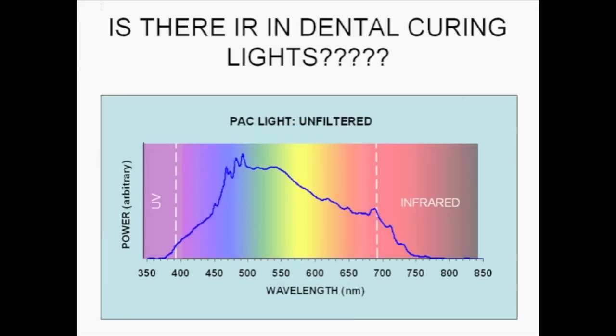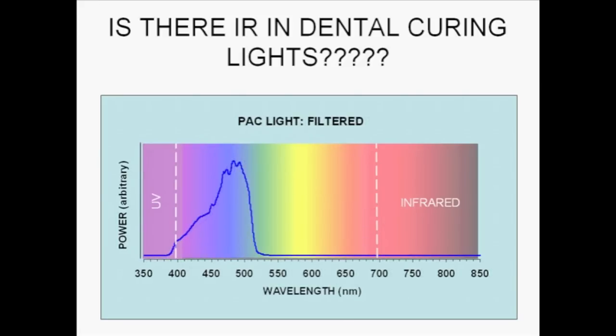The spectral emission of a plasma arc unit, the so-called PAC light, also indicates very broad emission over this range. However, when the unit is properly filtered, its light output is again restricted to only that within the short visible spectral range, blue and violet.